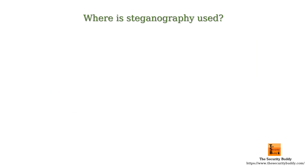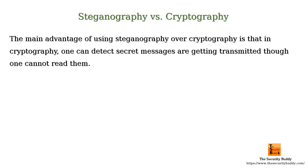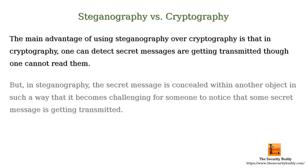Where is Steganography used? Steganography is often used by human rights activists, criminals, or terrorists to send a secret message. The main advantage of using Steganography over cryptography is that in cryptography one can detect that secret messages are getting transmitted, though one cannot read them. But in Steganography, the secret message is concealed within another object in such a way that it becomes challenging for someone to notice that some secret message is getting transmitted.